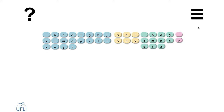Once you've answered that question it will take you to a screen where you'll see the basic selection of the letters of the alphabet in their initial, medial, and final positions, along with the option to use a silent E at the end of the word.